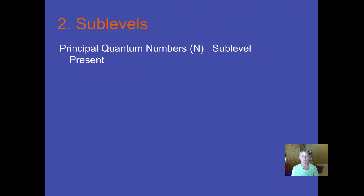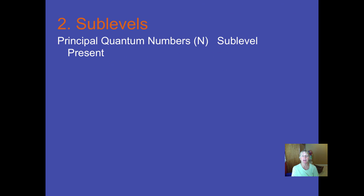Now, each of the energy levels can be subdivided into sublevels. So the number that you have for your principal quantum number matches how many sublevels you can have. So at the first energy level, you can have one subdivision. It's called the 1s.